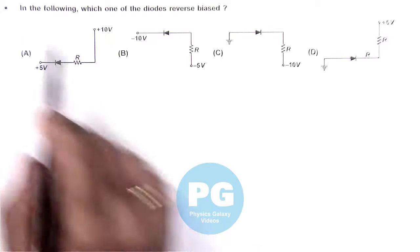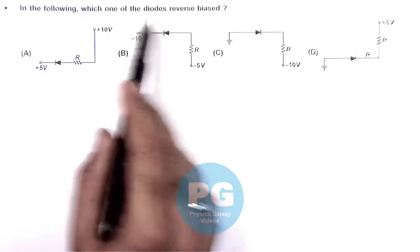In this question, it is asking which one of the diodes is reverse biased?